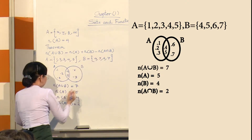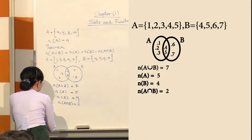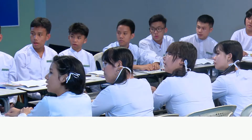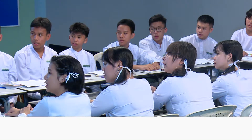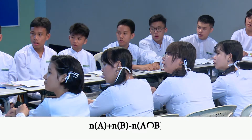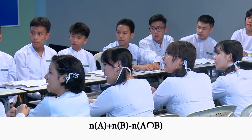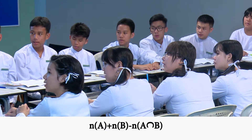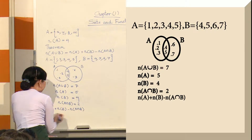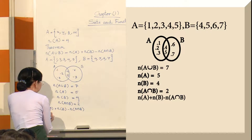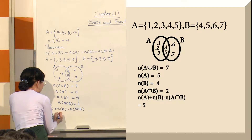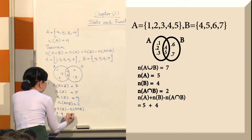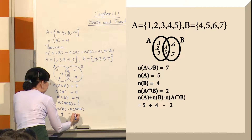The number of A union B equals number of A plus number of B minus number of A intersect B. Number of A is 5, number of B is 4, number of A intersect B is 2.